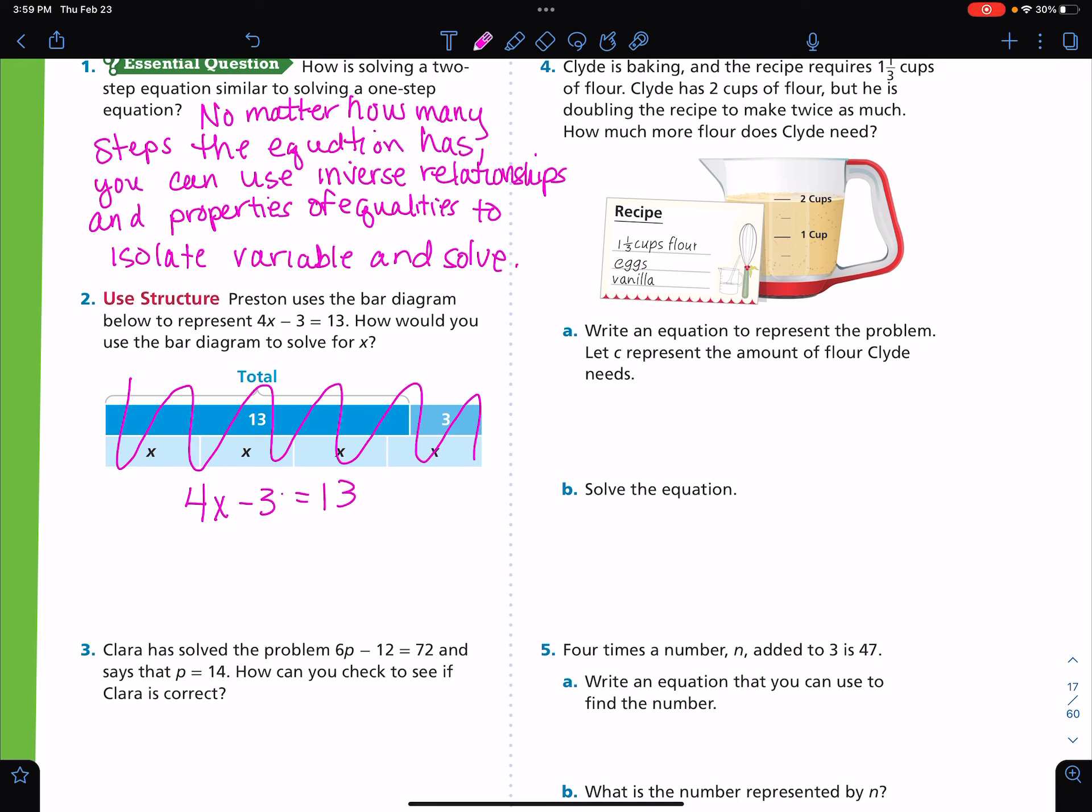So since it's a two-step problem, I'm going to look at my properties and work backwards. So the first thing that I'm going to do is move the subtraction. That subtraction right there that's connected to that variable, I'm going to add three to both sides. That means that this is zero. So 4X then equals 13 plus 3, which is 16. Continued inverse operation, I can move this 4 with the inverse operation of dividing by 4, and it will solve to be X equals 4.